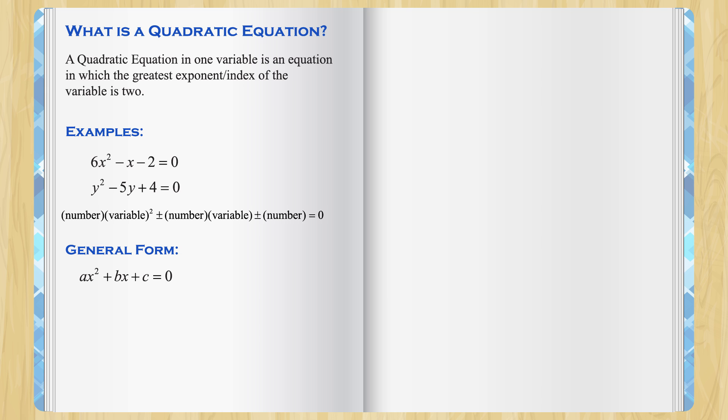If you compare the general form with the pattern that we just came up with, you should be able to see that they have used x in place of variable which is not necessary. y is also fine. That is why I chose example 2 to be in variable y.